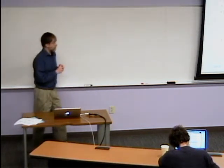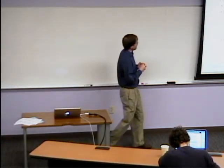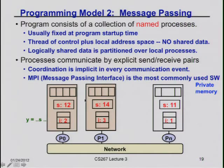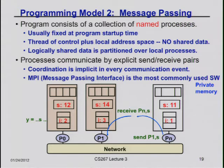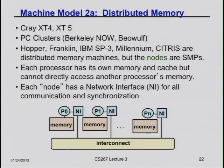In the message passing model, there are a bunch of processors shown in boxes. All the data is private — you can't refer directly to anybody else's data. Your variable i is your own, and this other processor's variable i is his own. If you want to communicate, you call a subroutine which says 'send data item S to processor 1.' Processor N might do that, and processor 1 has to say 'please receive data from processor N.' There are variations — you can receive from anybody.